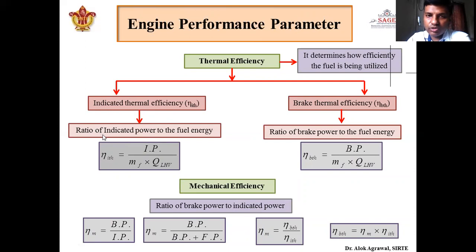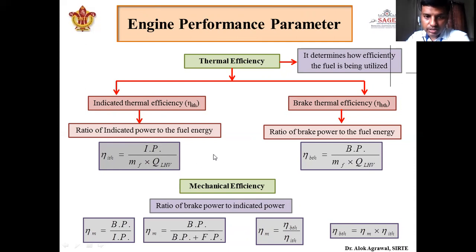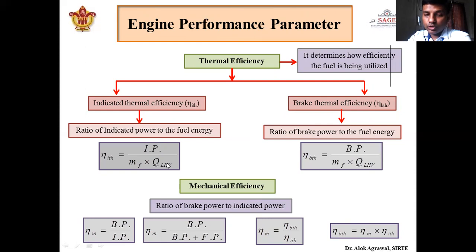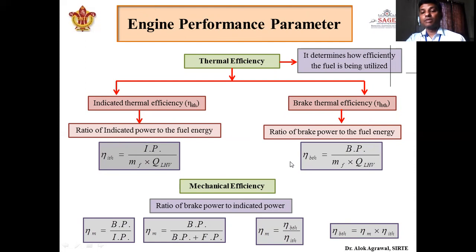Indicated thermal efficiency is the ratio of indicated power to fuel energy. Fuel energy is the mass of fuel burned multiplied by the calorific value of the fuel — the amount of energy released when unit mass of fuel burns. So: mass of fuel times calorific value gives total fuel energy in the denominator, with indicated power in the numerator. If we change the numerator from indicated power to brake power, we get brake thermal efficiency.